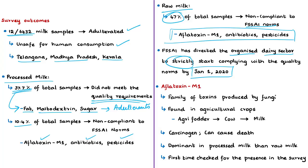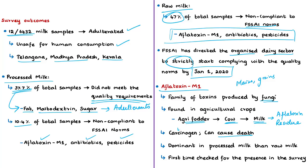From an examination point of view, aflatoxin M1 is one important contaminant in milk. In general, aflatoxins are a family of toxins produced by certain fungi, found on numerous agricultural crops like maize and grains. When the fodder of these crops is fed to milk animals, the milk they produce carries aflatoxin residues. If found in large quantities, aflatoxins can even lead to death, as they are carcinogens — they cause cancer. The milk is particularly contaminated with aflatoxin M1, which is more dominant in processed milk than in raw milk.